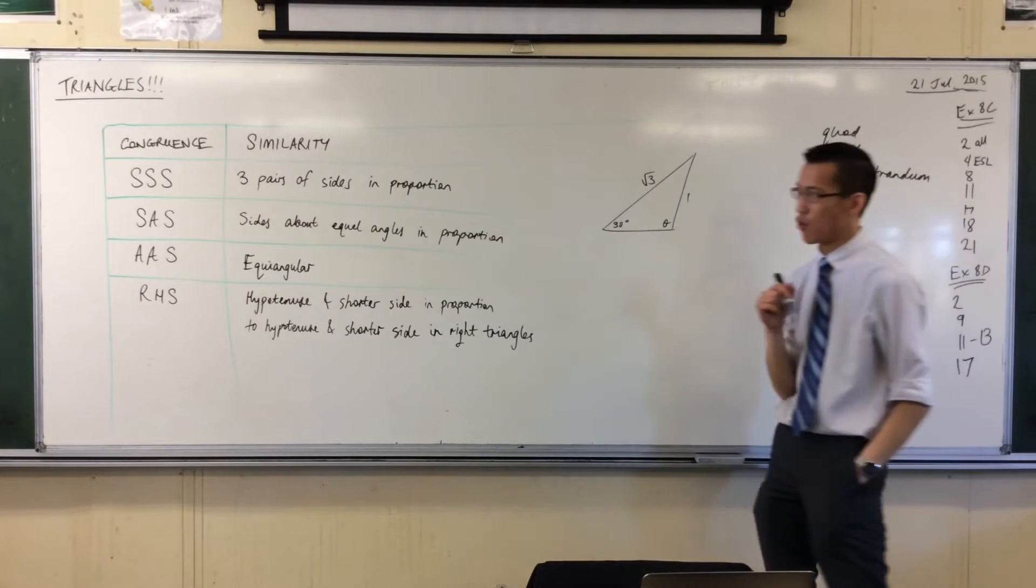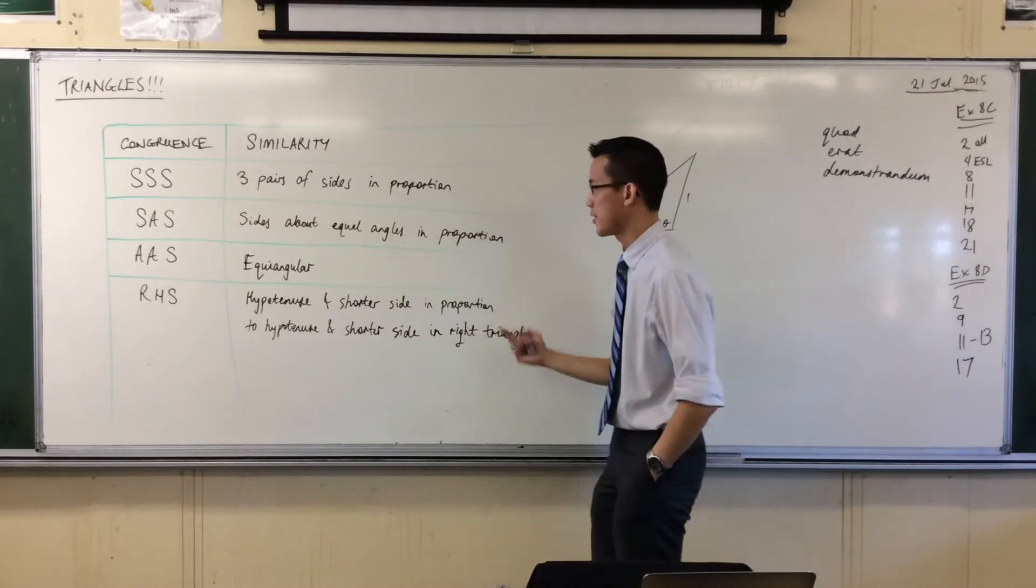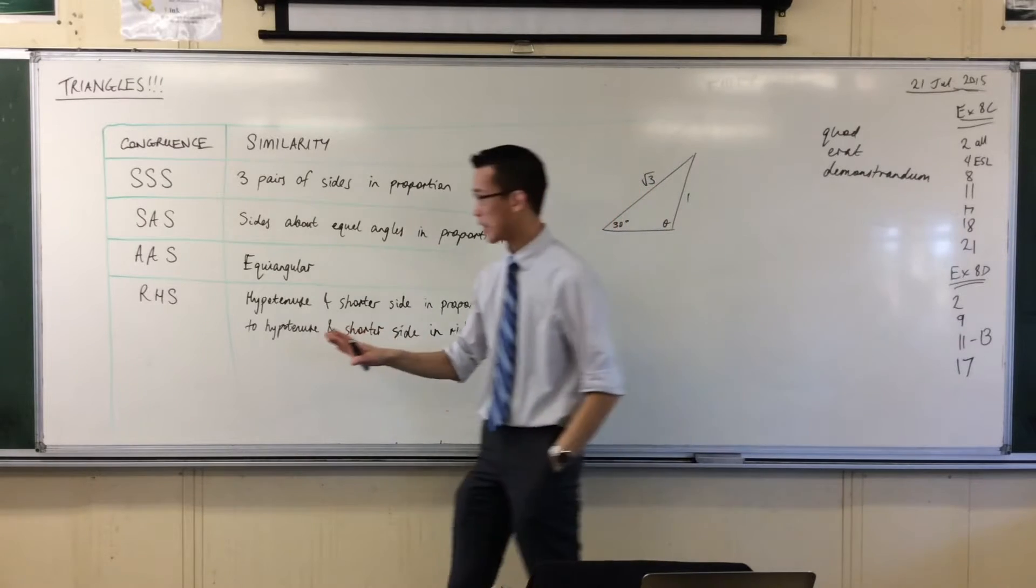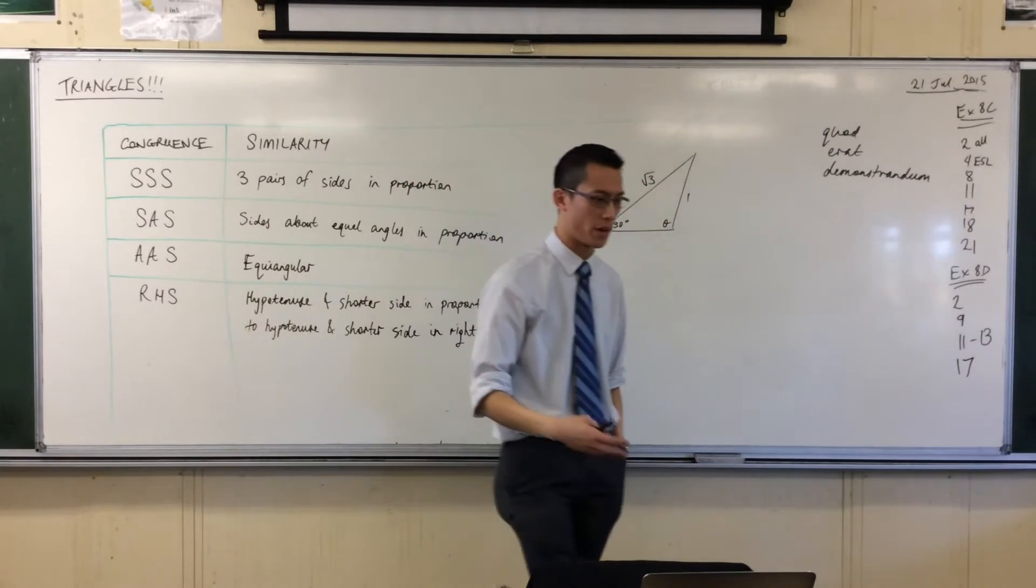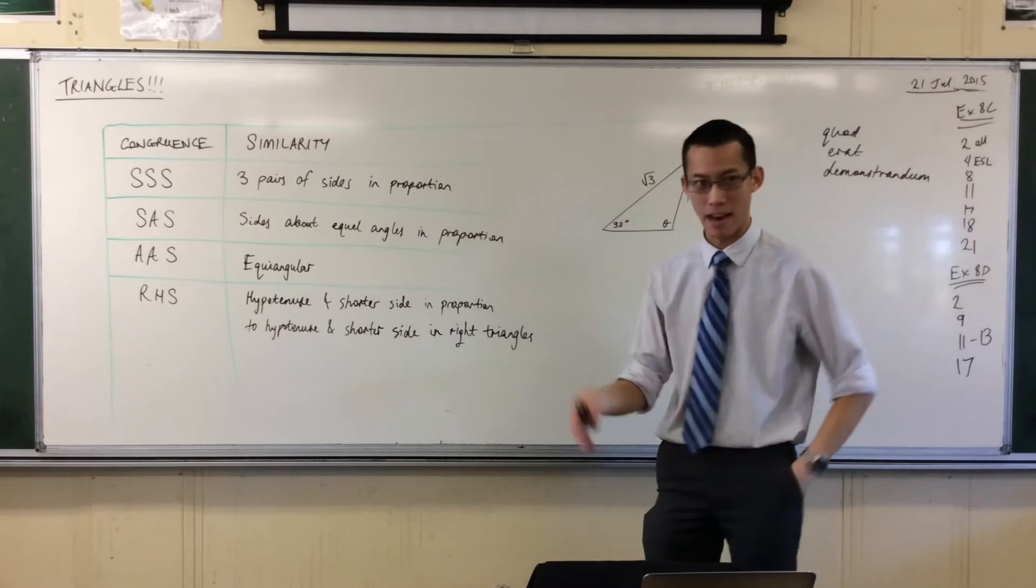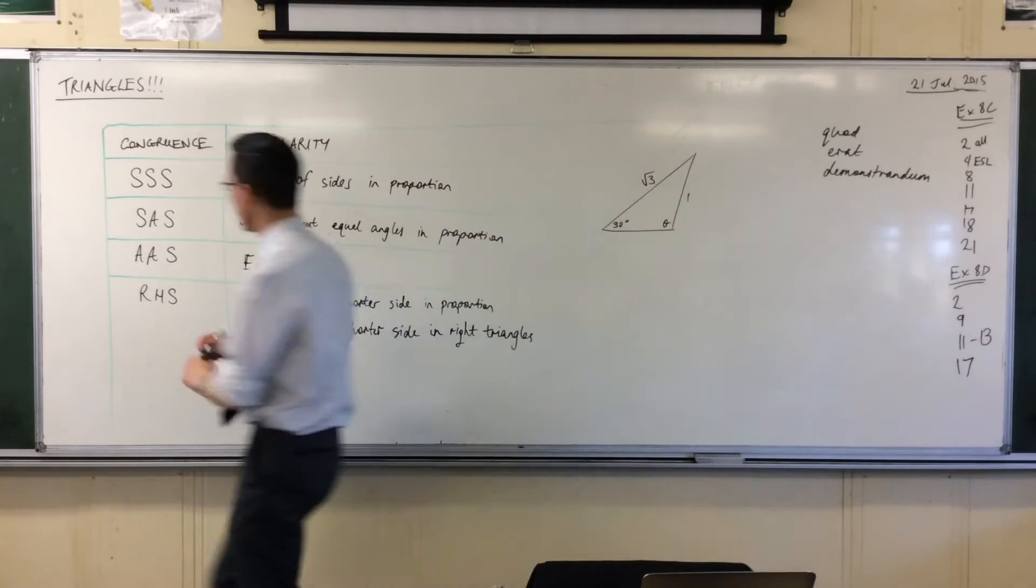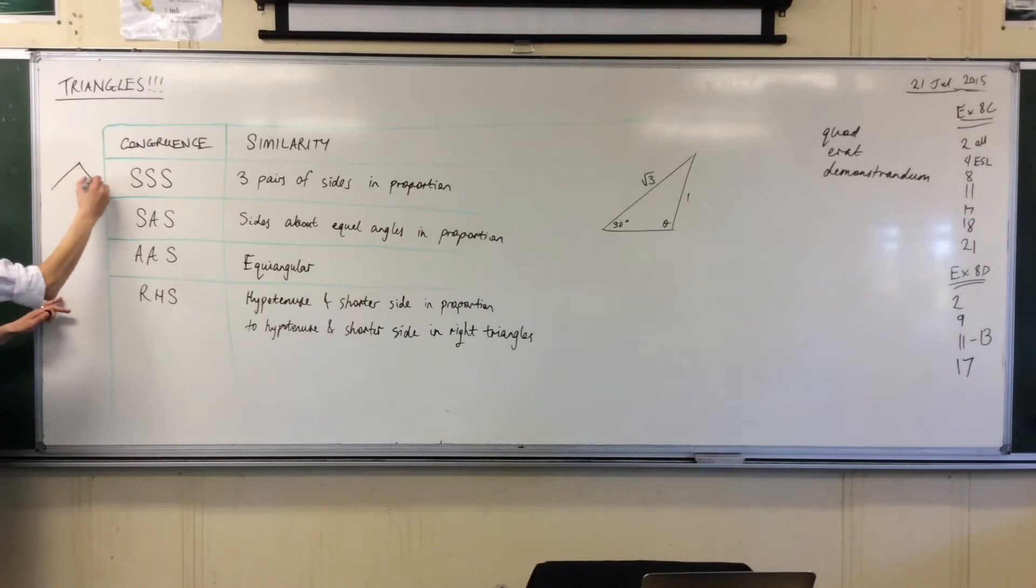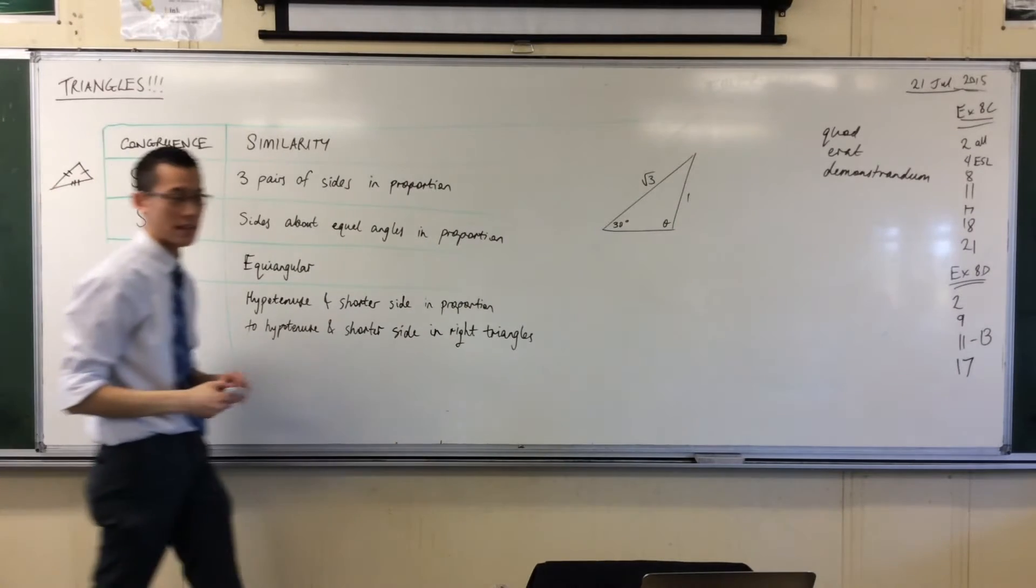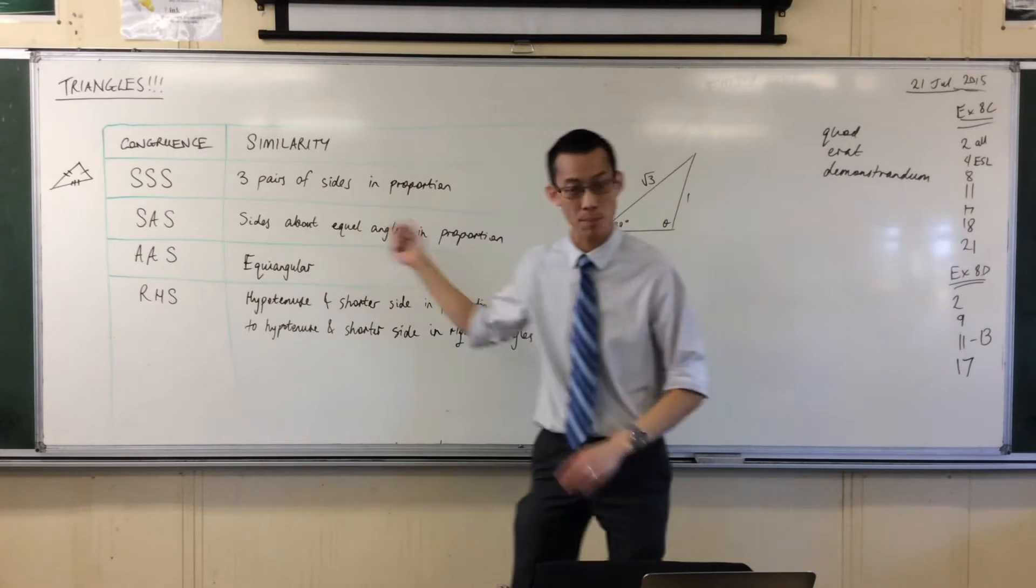Here are my four proofs for congruence and then for similarity. Now really quickly, I'm not going to draw the pairs because the whole point is if they're the same then I don't need to draw it once and then exactly the same again. So congruence is if you have a pair of triangles, if I have three sides that exactly match up, that's an SSS proof.